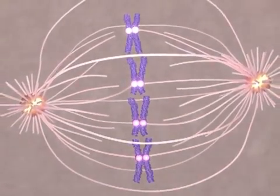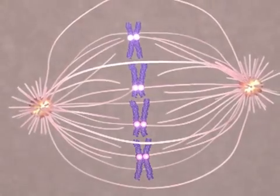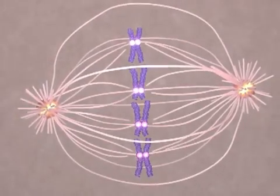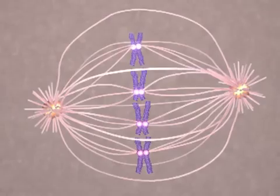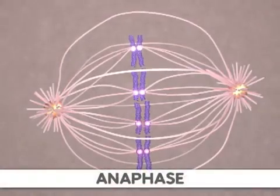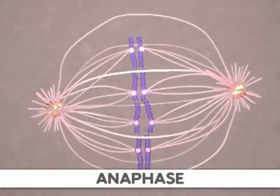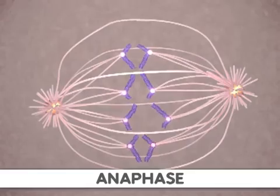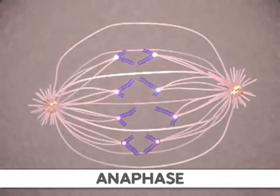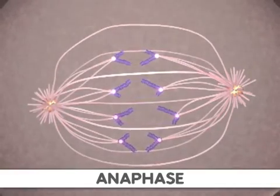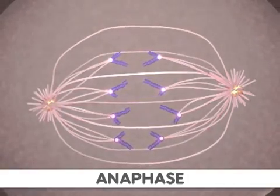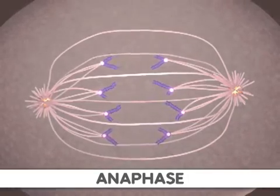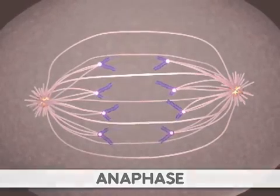This occurs during anaphase through a shortening of the microtubules attached to the kinetochores. Additionally, the poles of the cell move farther apart, causing increased separation of sister chromatids. At the end of anaphase, the sister chromatids have moved to the two ends of the cell.